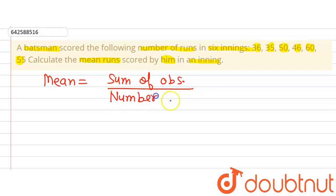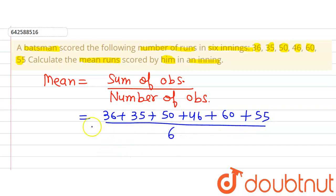Now the sum of observations is sum of this data, that is 36 plus 35 plus 50 plus 46 plus 60 plus 55, divided by number of observations. Because there are six innings, the number of observations is six.